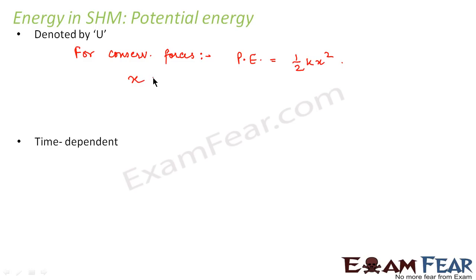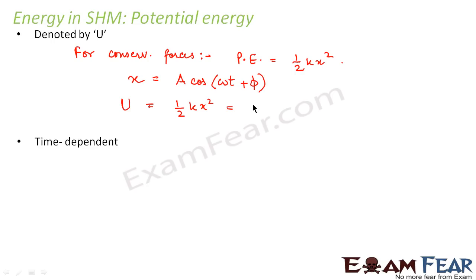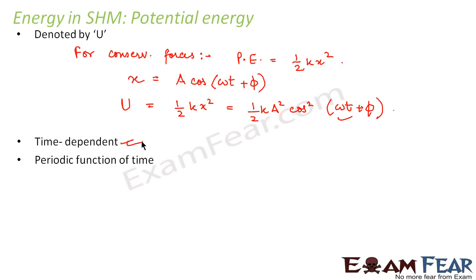Using that expression, we can say that X is equal to A cos(ωt + φ) for simple harmonic motion. So the potential energy for a particle executing simple harmonic motion will be equal to half K X square, that is half K A square cos square (ωt + φ). This is a periodic function of time, as it involves a cosine function, and the time period here is also T by 2.